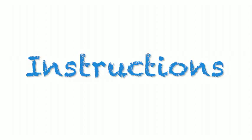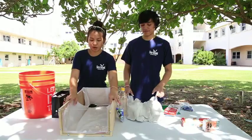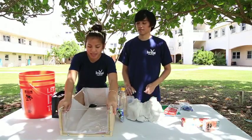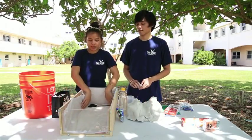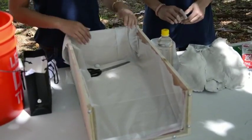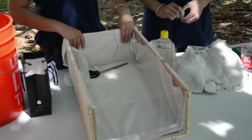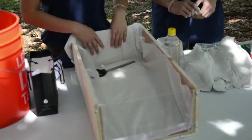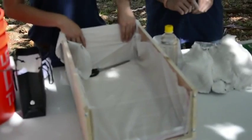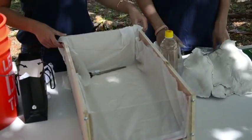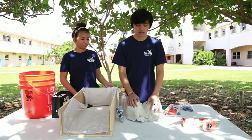So the first thing you want to do is line your watershed with a plastic bag or a trash bag that you cut up. Or if the box that you use is waterproofed, you could just leave it as it is.